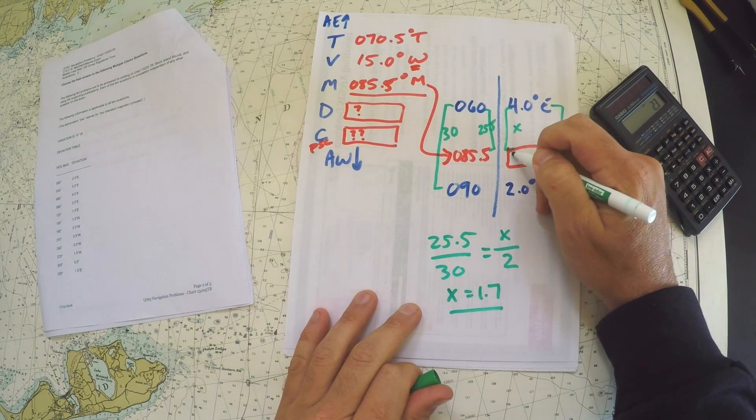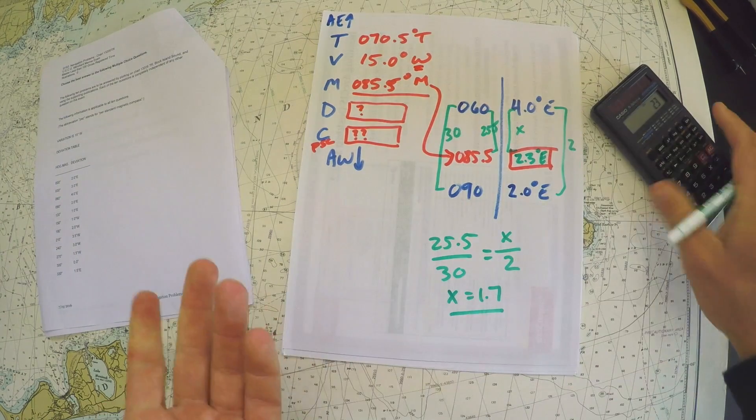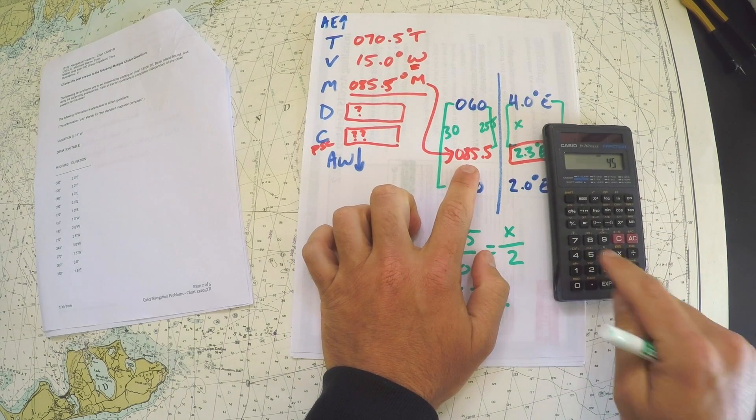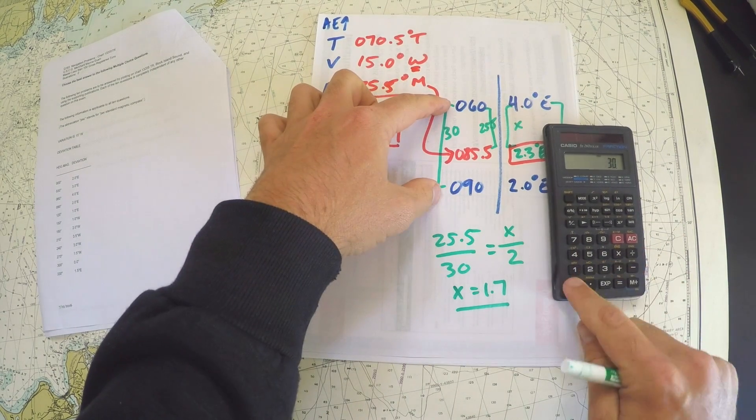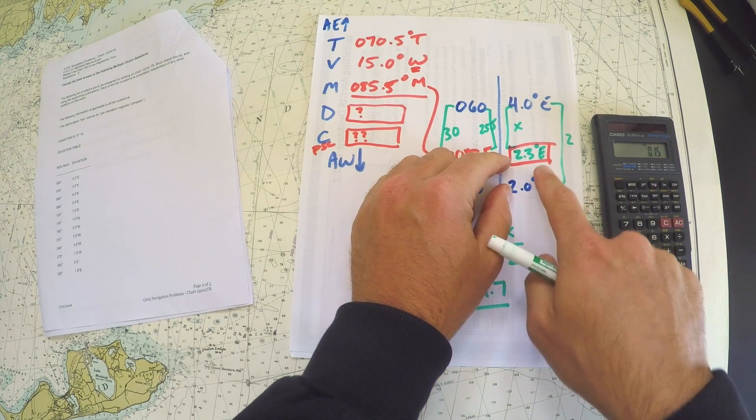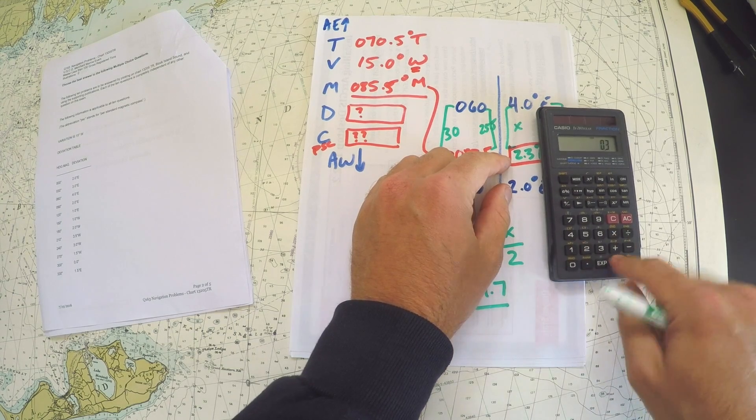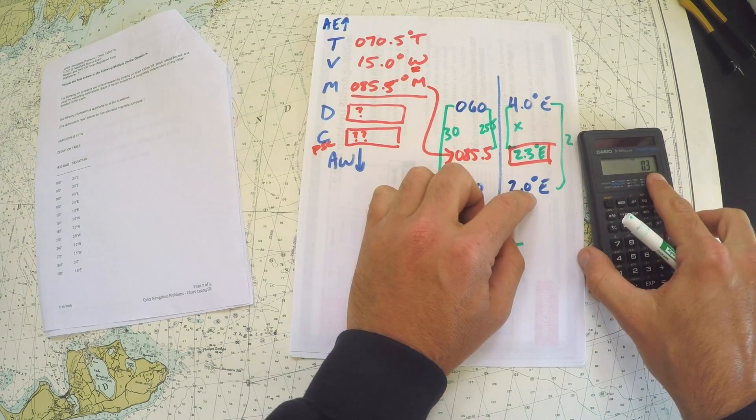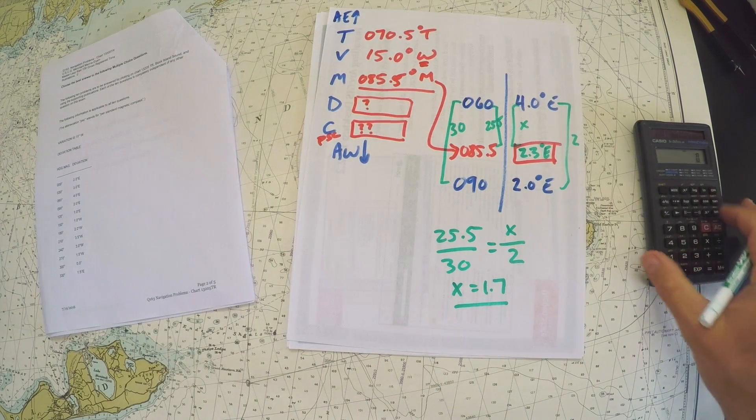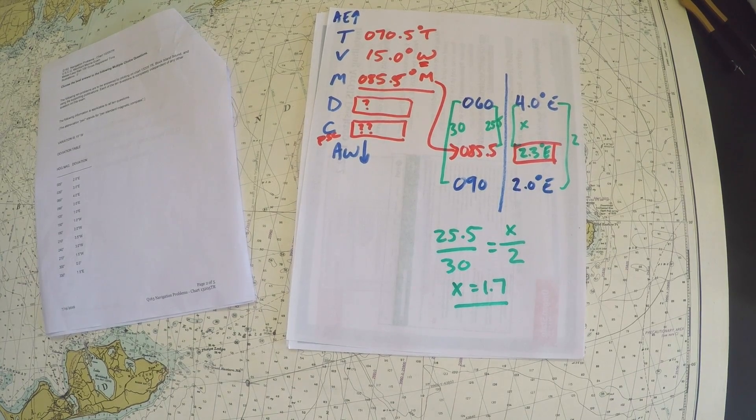So you could do that by saying 4 minus 1.7 equals 2.3, and our correct deviation should be 2.3 degrees east. If you don't like to do it that way, you could do it a different way. You could say the gap here is 4.5 out of 30, and the gap here is x out of 2, so if you multiply that by 2, it's 0.3, and you would just add 0.3 to 2. So either way, however you end up working it, you can see that the deviation should be about 2.3.